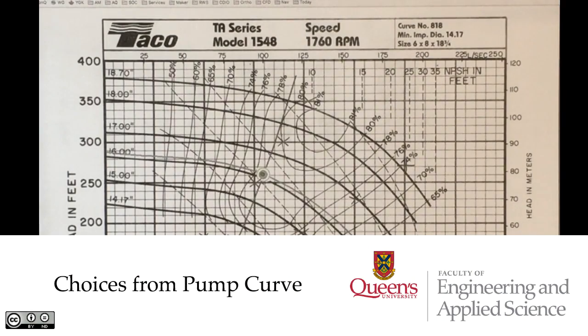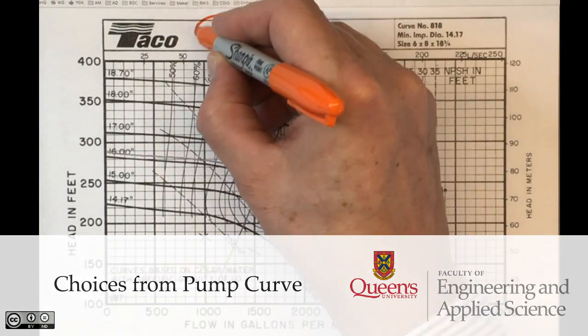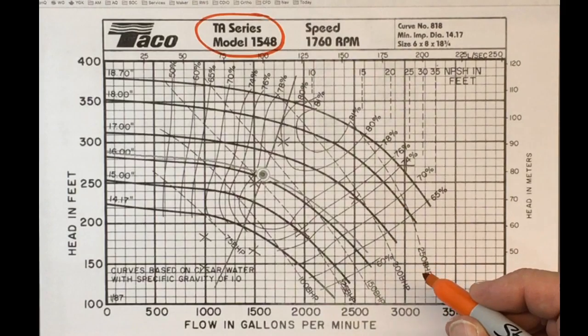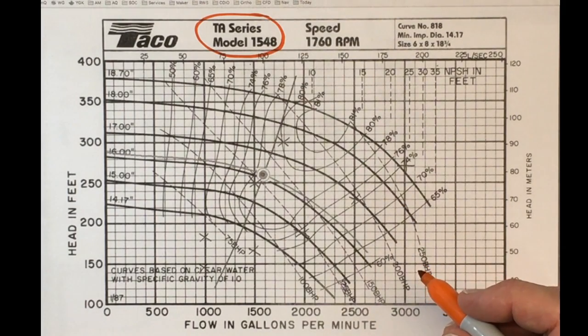We've done some computations for our piping system with a TACO TA Series Model 1548 pump, and we were looking at an initial design that had 6-inch piping involved.